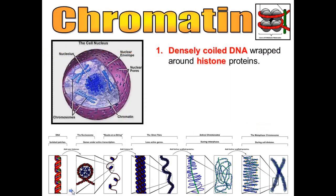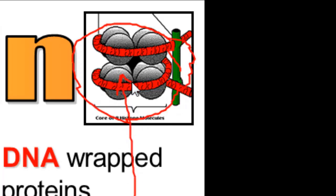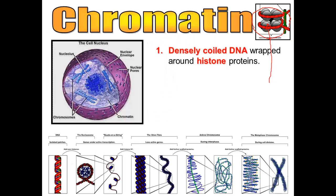Chromatin is densely coiled DNA. Because there is such a massive amount of DNA inside every cell in your body, it has to be coiled and wrapped up. The cell does this by wrapping the DNA around histone proteins — which is what the gray balls are representing here. The DNA gets spun up and wrapped around these blue histone proteins, and all of those wrapped up pieces get coiled up, then twisted, and further wrapped and twisted and coiled.